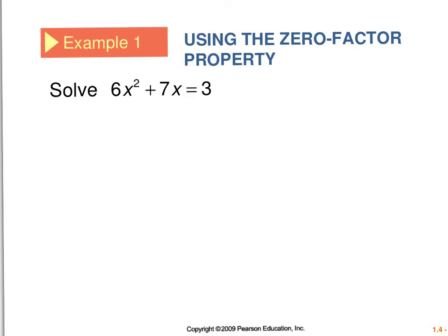This says solve using the zero factor property. The zero factor property just states that if I have two things multiplied together, so say I have an a times b, and that's equal to zero, then either the a has to be zero for the product to be zero, or the b has to be zero.